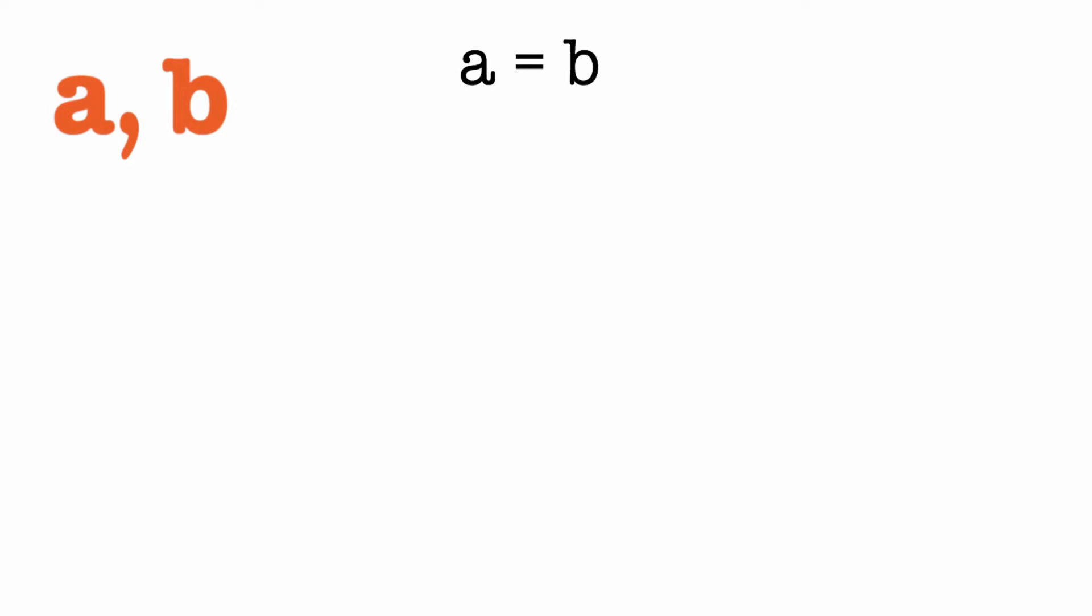Now since this is true, we can also say that A squared is equal to B squared. But since A equals B, we can change this B squared here to say AB.